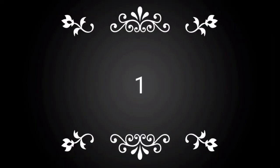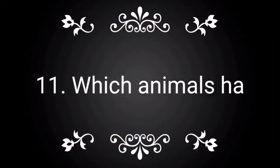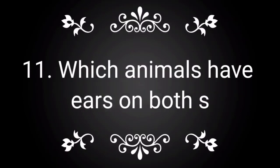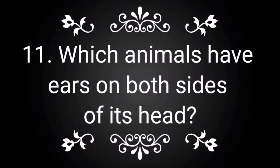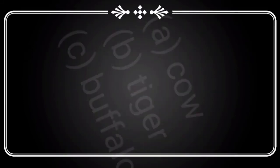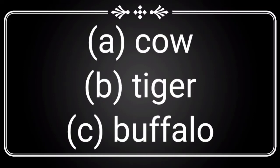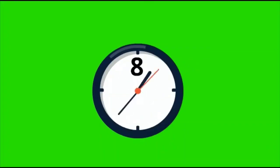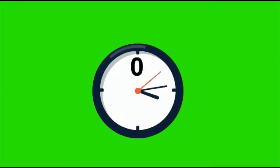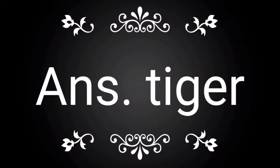Question number 11: Which animals have ears on both sides of its head? You have three options — Option A: cow, Option B: tiger, Option C: buffalo. Think the correct answer within 10 seconds. The correct answer is tiger. Tiger is the correct answer for this question.